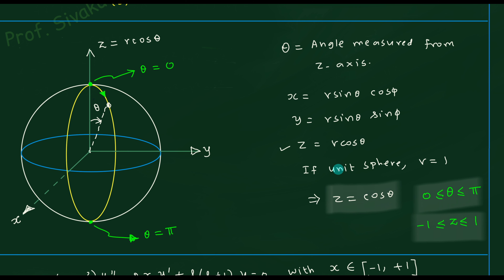In the spherical polar coordinate system you have r, θ, φ. We are interested in discussing only the θ part, and the equation containing only θ is z = r cos θ. If you complete the right-angle triangle with radius r, then r cos θ lies along the z-axis. For a unit sphere where r = 1, you simply get z = cos θ. That is the reason we substitute cos θ in place of x.